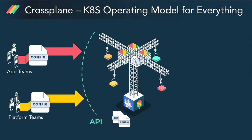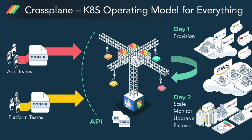We started Crossplane because early on we saw the power of this operating model and wanted to take it beyond container orchestration. We believe containers are simply the first use case of this operating model, and that this operating model is applicable to the management of all applications and infrastructure. Crossplane makes that happen. It extends Kubernetes by adding APIs and controllers that enable it to manage resources and services from multiple cloud and infrastructure vendors.